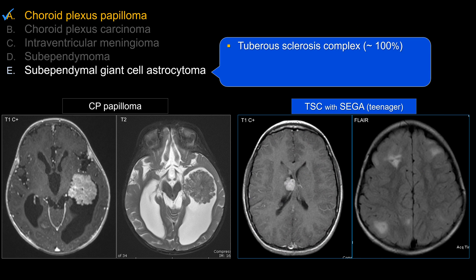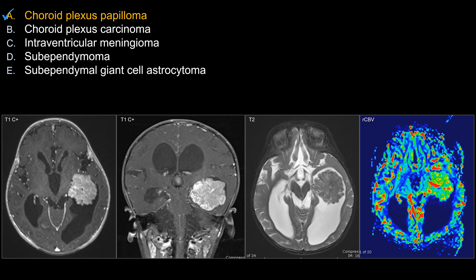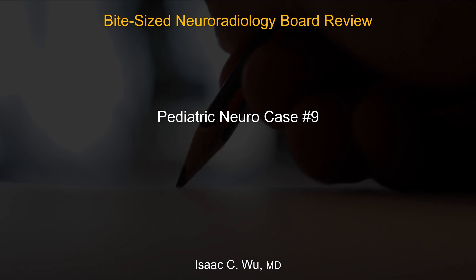Lastly, subependymal giant cell astrocytoma. For this, you should see other findings associated with tuberous sclerosis, such as cortical and subcortical tubers and other subependymal nodules. It is very uncommon to see a subependymal giant cell astrocytoma in a patient without tuberous sclerosis. The key feature is that it's greater than one centimeter and usually located around the foramen of Monro, so it can cause obstruction. This is a pediatric disease occurring in young patients with tuberous sclerosis. That is all for choroid plexus papilloma — thanks for your attention and good luck on your board exam.